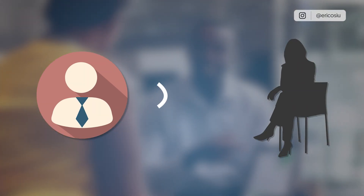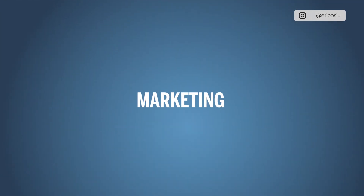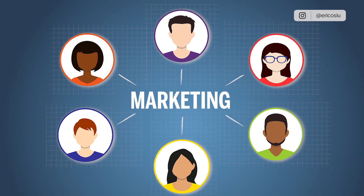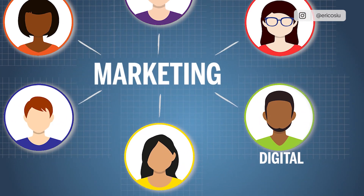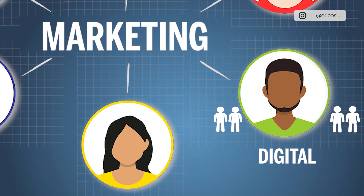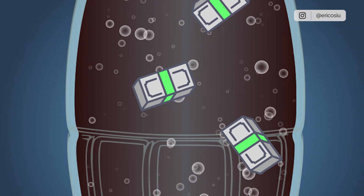Now, with account-based marketing, if I want to reach Coca-Cola nowadays, for sure they have multiple people on their marketing team. Maybe I have software and I want to reach their digital marketing team and hit four people from their team. Instead of just going for one, I'm hitting multiple people on their team, and I'm going for the account — not just an individual. That is what account-based marketing is.